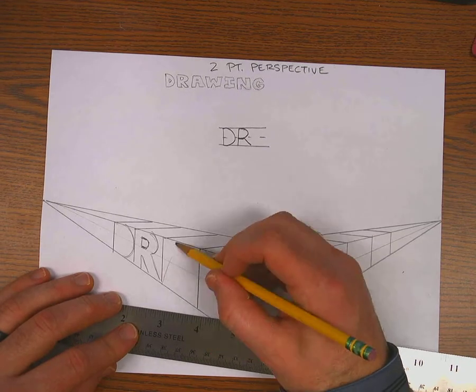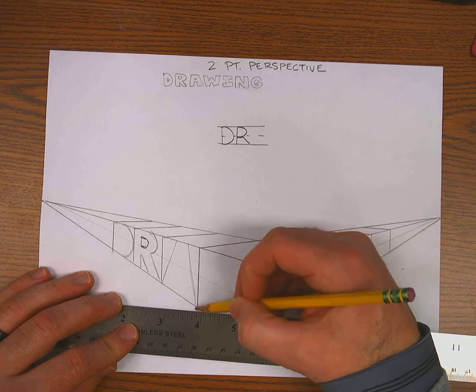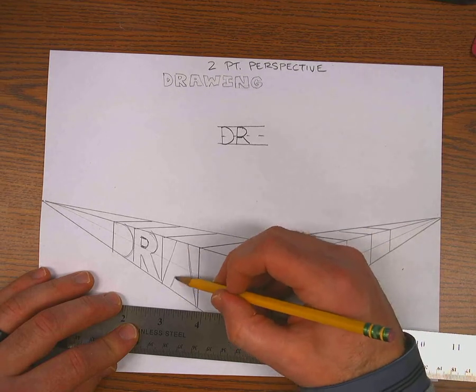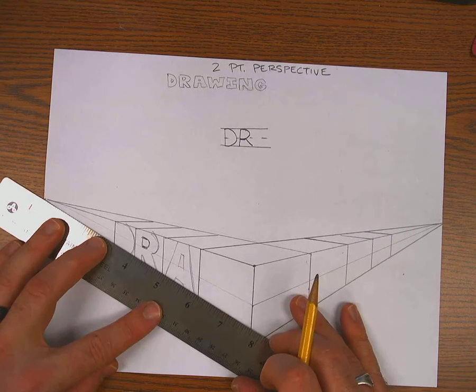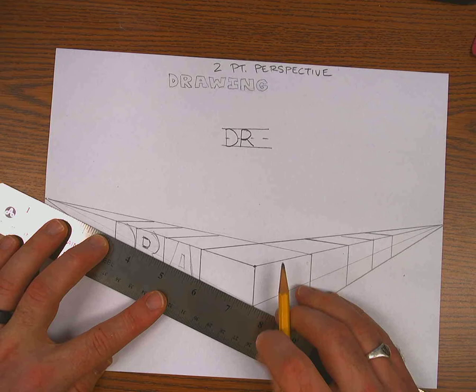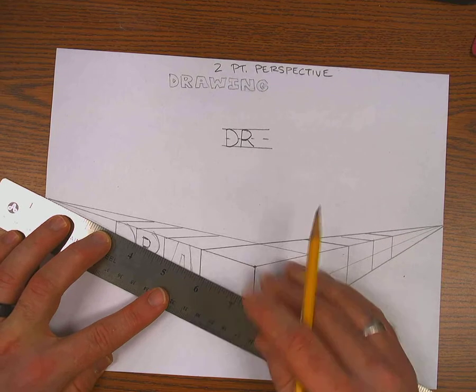Okay, I'll do the A here. I'm going to sketch it in first. And the A has some horizontal lines on it, so you need to make sure that they go towards the vanishing point.